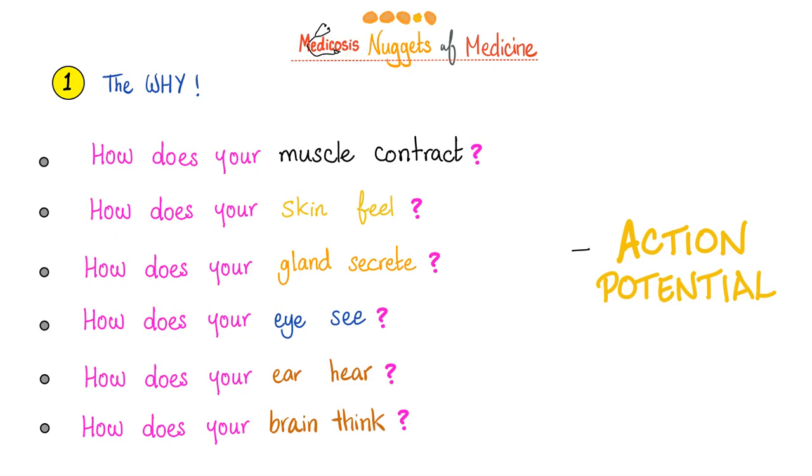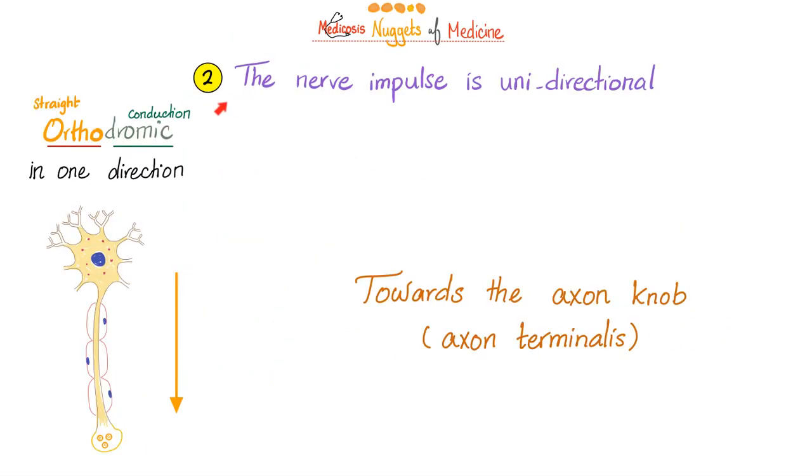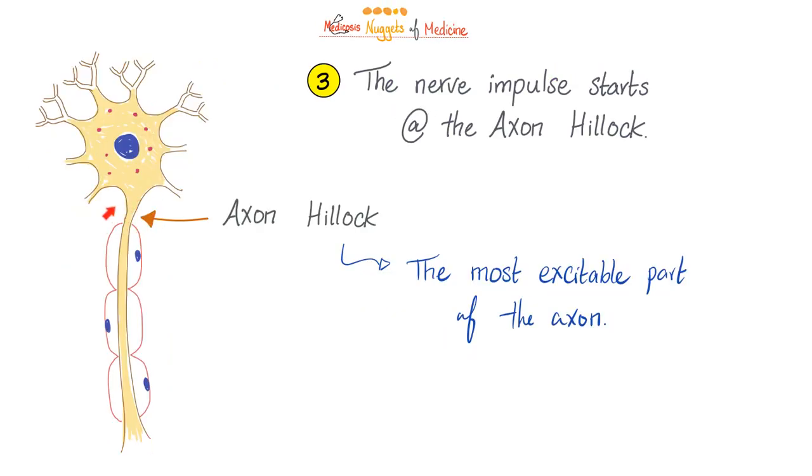Let's review Medicosis Nuggets of Medicine. Nugget number one: Why do we need the action potential? Because the action potential is life. In your body the nerve impulse is unidirectional. Experimentally in the lab it's possible to go both ways, but in your body it does not happen. Where does the nerve impulse start? It doesn't start in the soma. It starts in the axon hillock because this is the most excitable part of the axon.